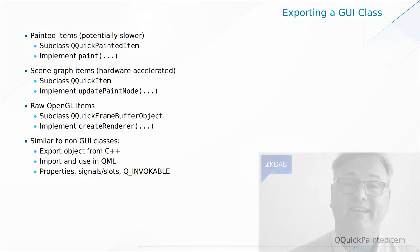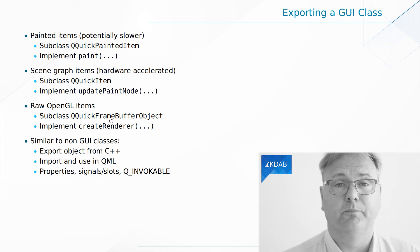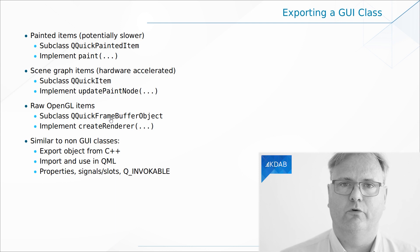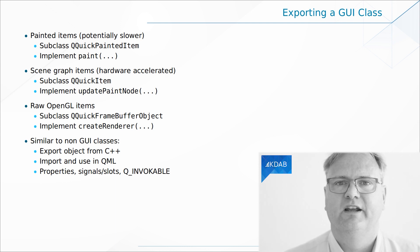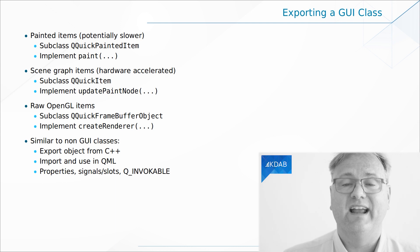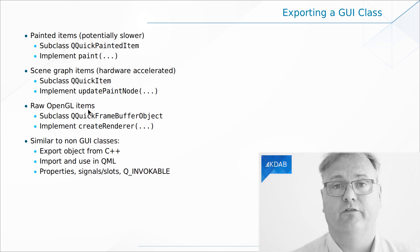I would personally always go initially with QQuickPaintedItem, see how it works. If it turns out that it's really lacking and I don't get my 60 frames per second, that's when I'll invest in rewriting it to use QQuickItem directly and set up my node using UpdatePaintNode. It's also possible to integrate raw OpenGL into your QML scene — for example, a map widget that already exists and you just need to integrate it. But that's definitely in the land of very advanced stuff.